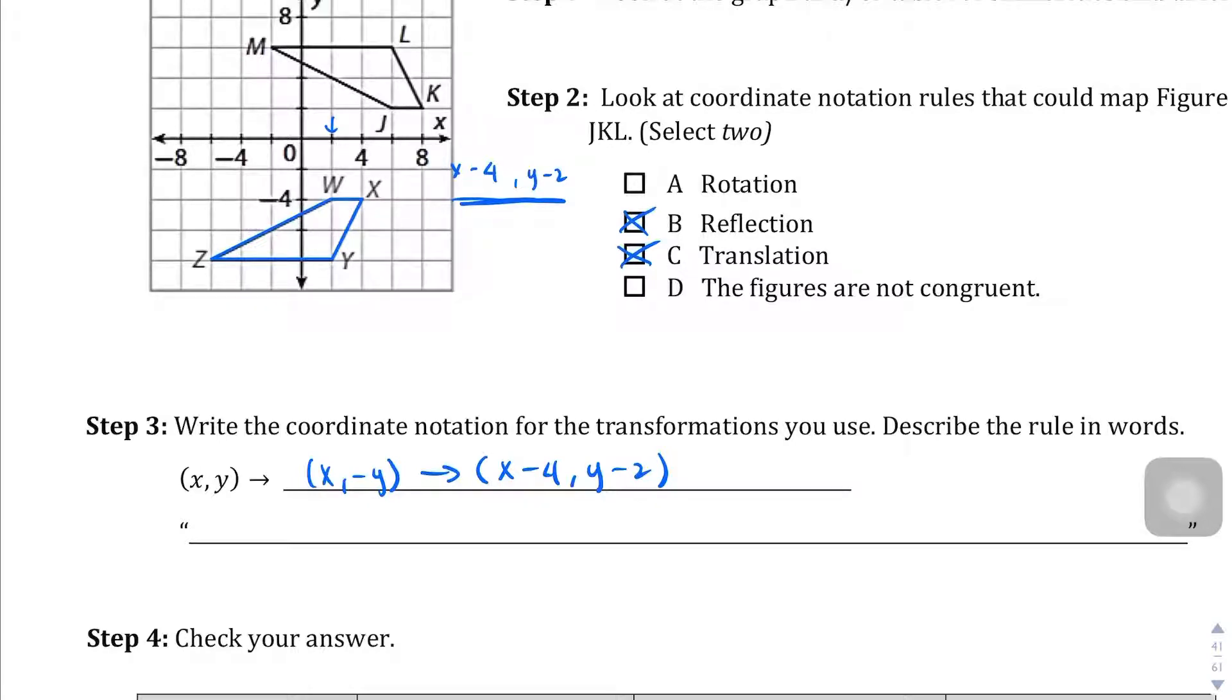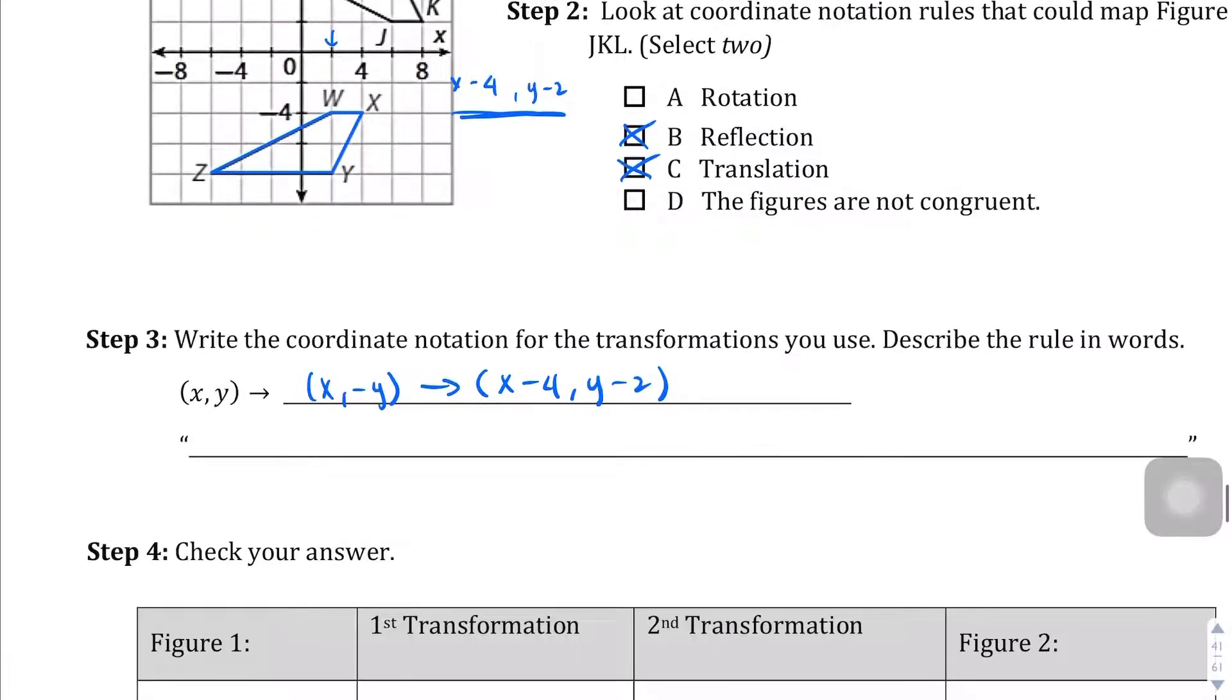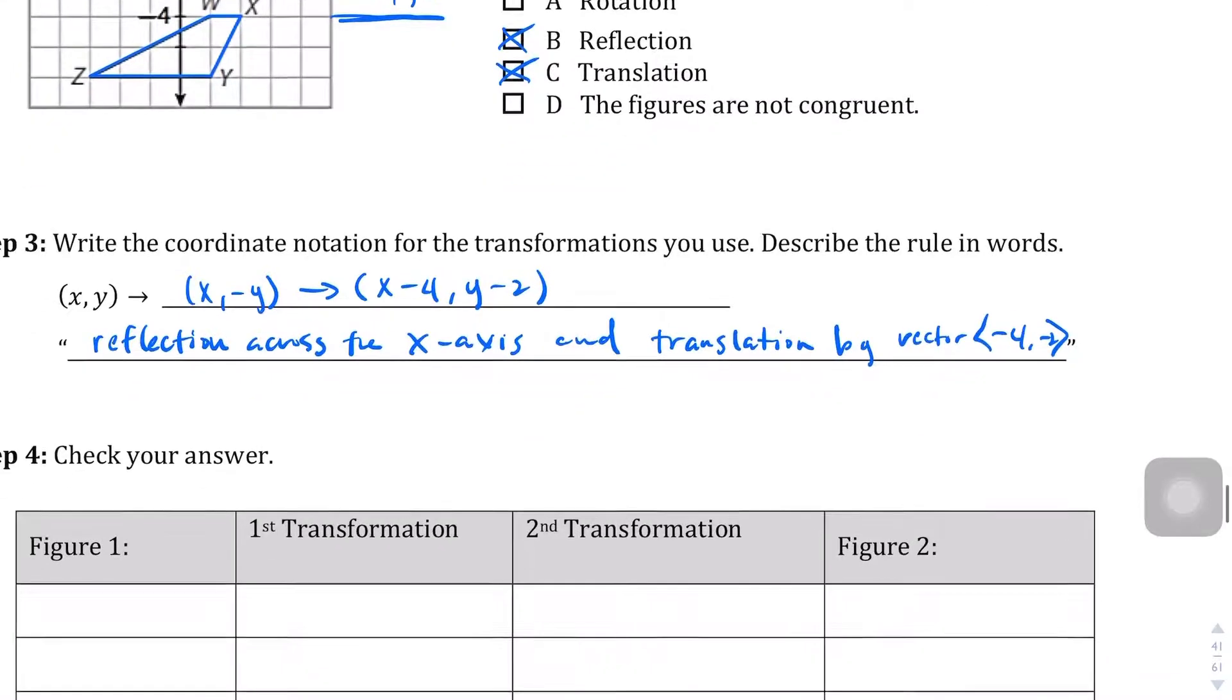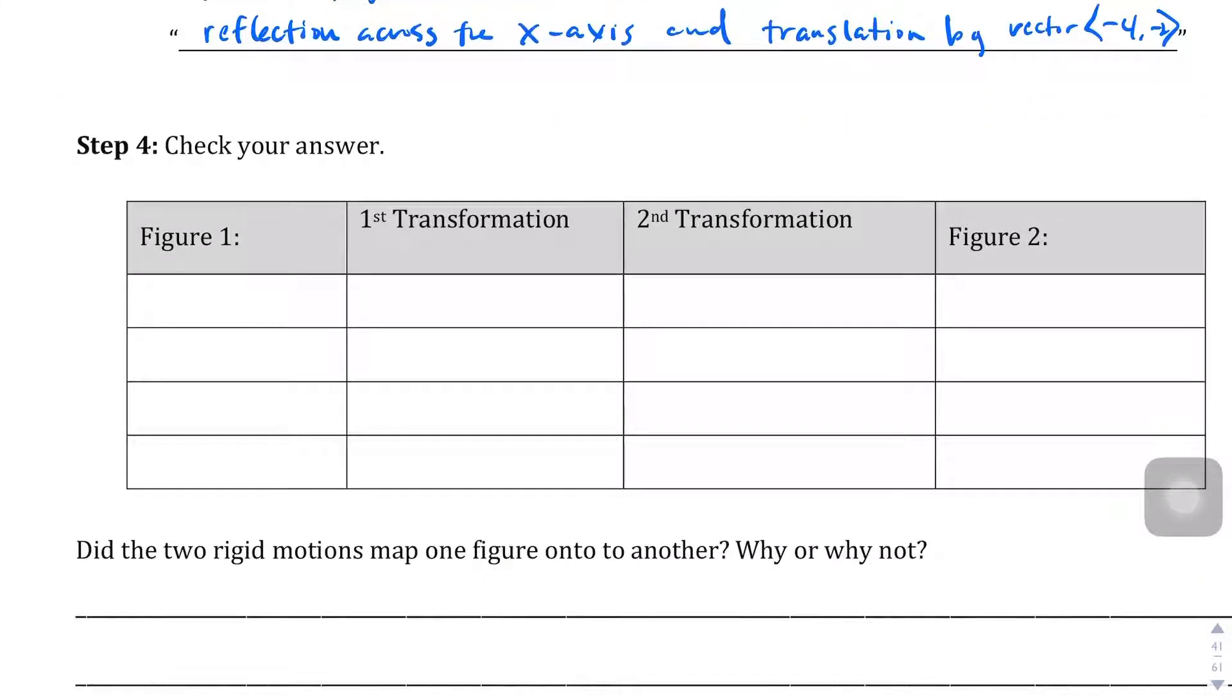Hopefully that made sense. If that still didn't make sense, talk to your teacher. So, it looks like here they actually want us to write it out in English: reflection across the X-axis and translation by vector <-4, -2>. It's not going to be a regular parenthesis, it's this pointy thing. Oh, they wanted to check our answers.